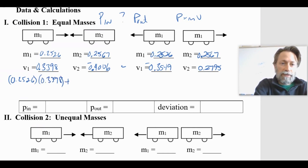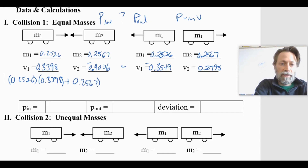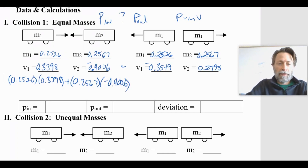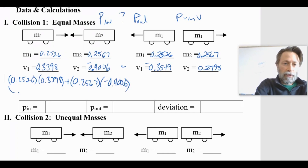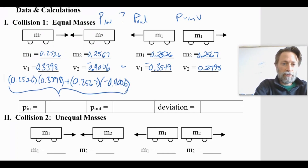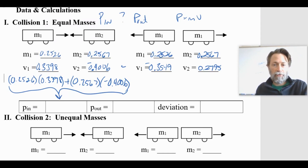Then add the mass times velocity of the second car — the red car — which is 0.2567 times negative 0.4006. Put all of that into your calculator, and the result goes into the momentum-in value.